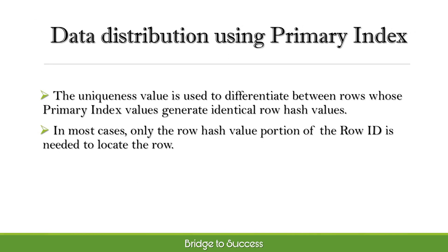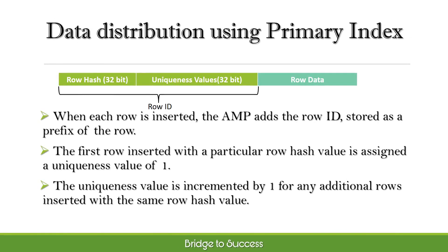The uniqueness value is used to differentiate between rows whose primary index values generate identical row hash values. In most cases, only the row hash value portion of the row ID is needed to locate the row. When each row is inserted, the AMP adds the row ID, stored as a prefix of the row. The first row inserted with a particular row hash value is assigned a uniqueness value of 1. The uniqueness value is incremented by 1 for any additional rows inserted with the same row hash value.